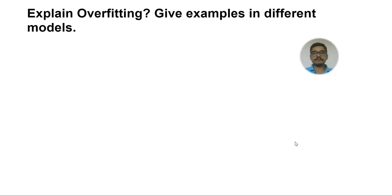Let's start. The first question is about explaining overfitting and giving examples in different models. This is a very common question asked in all interviews. But people usually give a kind of explanation that overfitting happens when training error is less and test error is very high. That's the common definition they give for overfitting, but you should give a more constructive answer to the interviewer.